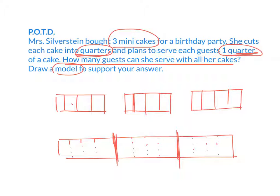Now, how many guests can each get a piece? All I need to do is count the pieces. One, two, three, four, five, six, seven, eight, nine, ten, eleven, twelve. How many guests can each get a piece? Twelve. Twelve guests.